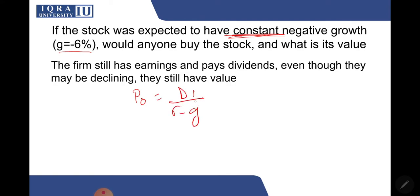But over here now the growth rate itself is negative. So let's just plug in the values, same example we've been doing, in which d naught is 2. The growth rate is now negative 6% and r is 13%. So let's plug in the values. D naught is given as 2, you have to convert it into d1.